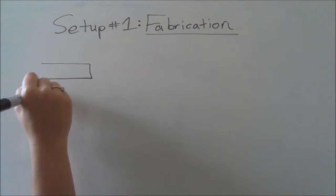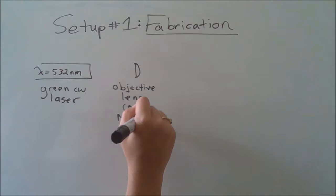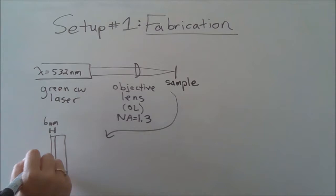To fabricate the structure, we start by sputtering a layer of gold onto a glass substrate. We then place the sample into a setup using a green continuous wave laser and an objective lens. The tightly focused light heats the gold and causes dewetting.